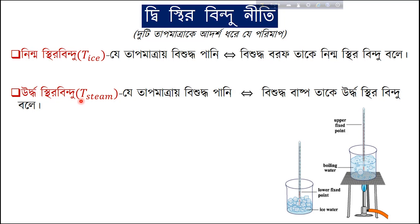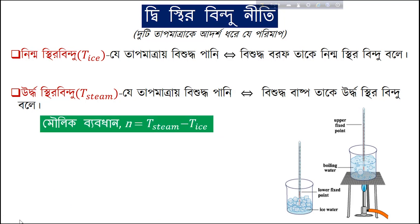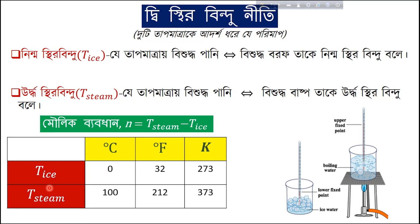From pure water we get pure ice, and converting back from pure ice we get pure steam — or pure ice converts to pure steam. The temperature of pure ice is 0 degrees Celsius, which is the standard lower fixed point.